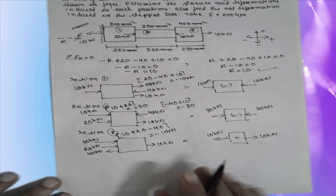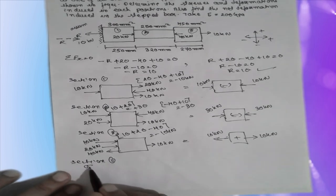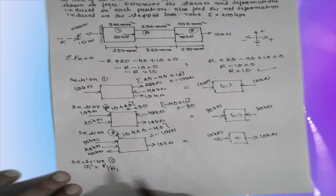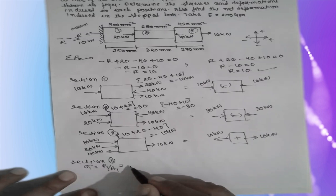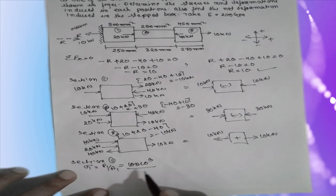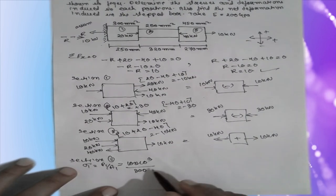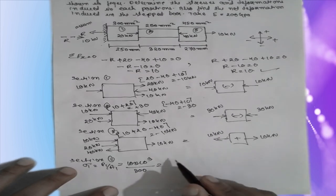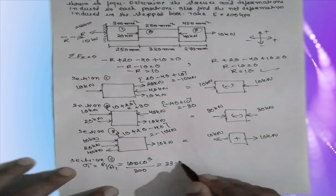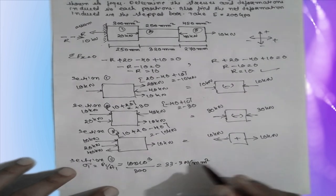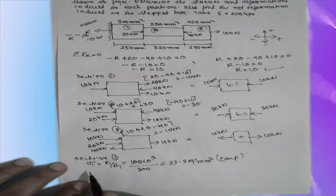Now we find the stress in each section. Sigma 1 equals P1 divided by A1. P1 is 10 kilo Newton, which is 10 into 10 raised to 3 Newtons, divided by area A1 equal to 300 mm squared. The answer is 33.3 Newton per mm squared, and it is compressive.